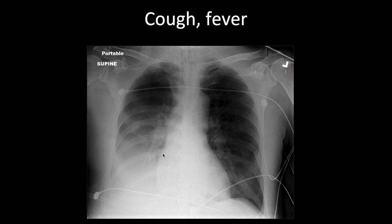In this case, abnormalities are in the lower zone of the right lung: no air, obscured lung markings, no volume loss — consolidation. The right heart border is visible, so the middle lobe is not involved. The diaphragm is not visible, which tells you the lower lobe is involved. This is consolidation of the lower lobe of the right lung.